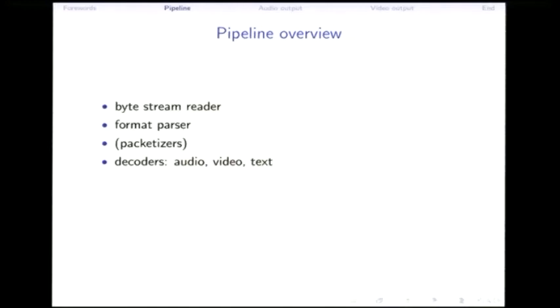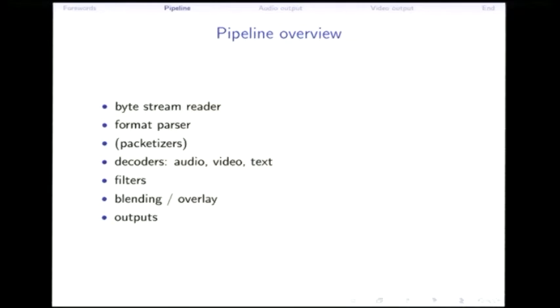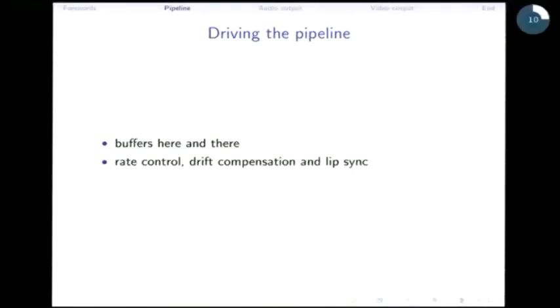Then you have the decoders: audio decoders, video decoders, subtitle decoders, or font renderers. Then you have what I would call output — filters, deinterlacing, gamma correction, blending and overlays where you put the subtitles back into the video signal — and then you output audio and video. The pipeline is driven by buffer levels, flow control, drift compensation, and lip sync, which is all time-based. That's basically the main difference between multimedia and other desktop applications: we drive everything on time, we don't load the whole file. A typical video might be gigabytes in size — it could be terabytes after decoding.